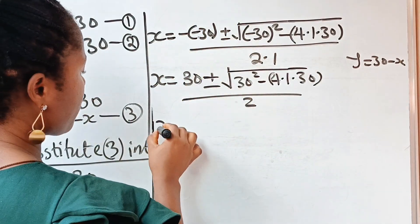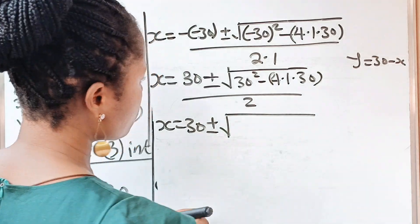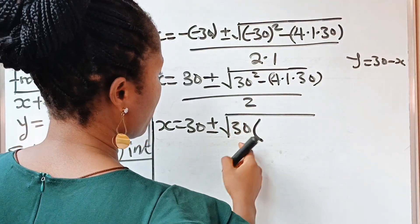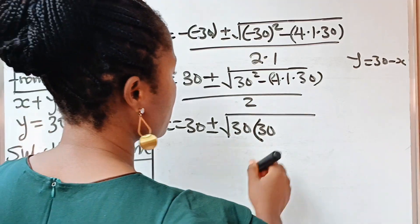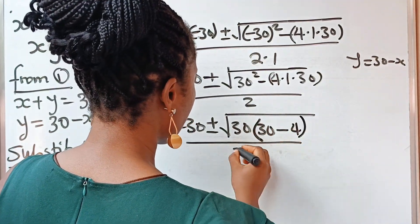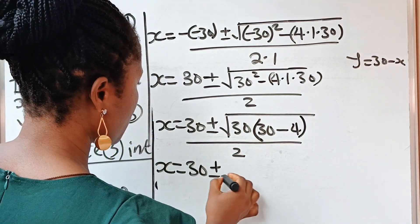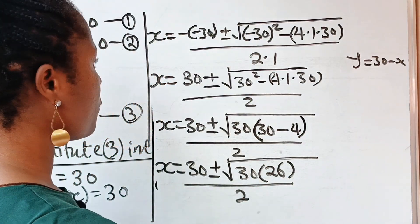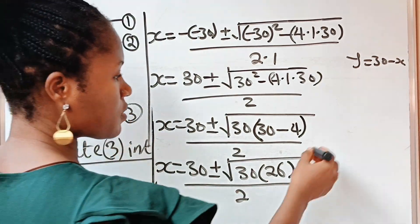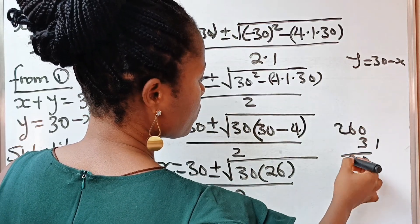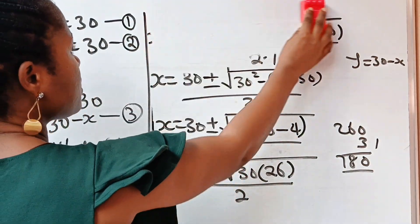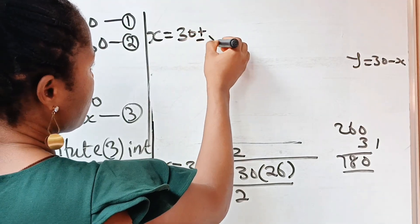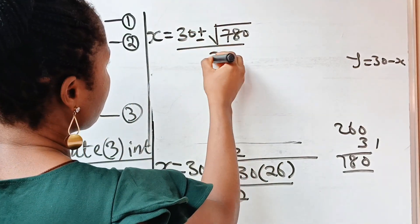Now let us solve. We have x equals 30 plus or minus the square root of 780, divided by 2. Now let's simplify 780: we can factor out 4, since 780 equals 4 times 195. So we can write x equals 30 plus or minus the square root of 4 times 195, all divided by 2.